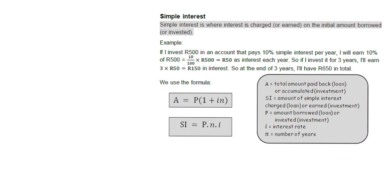Here's an extract from a textbook that shows the same ideas. Simple interest is charged or earned on the initial amount borrowed or invested. If I invest 500 rand in an account that pays 10% simple interest per year, I will earn 10% of the initial amount — so 10% of 500 — each year. 10% of 500 is 50 rand interest each year. We took the interest rate and multiplied it by the amount initially invested to get 50 rand per year.